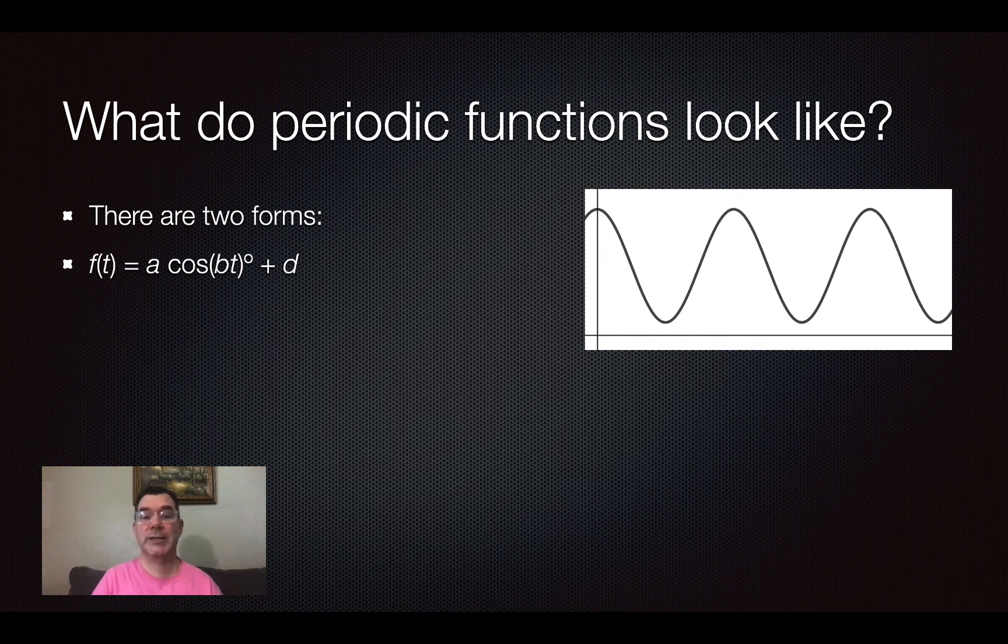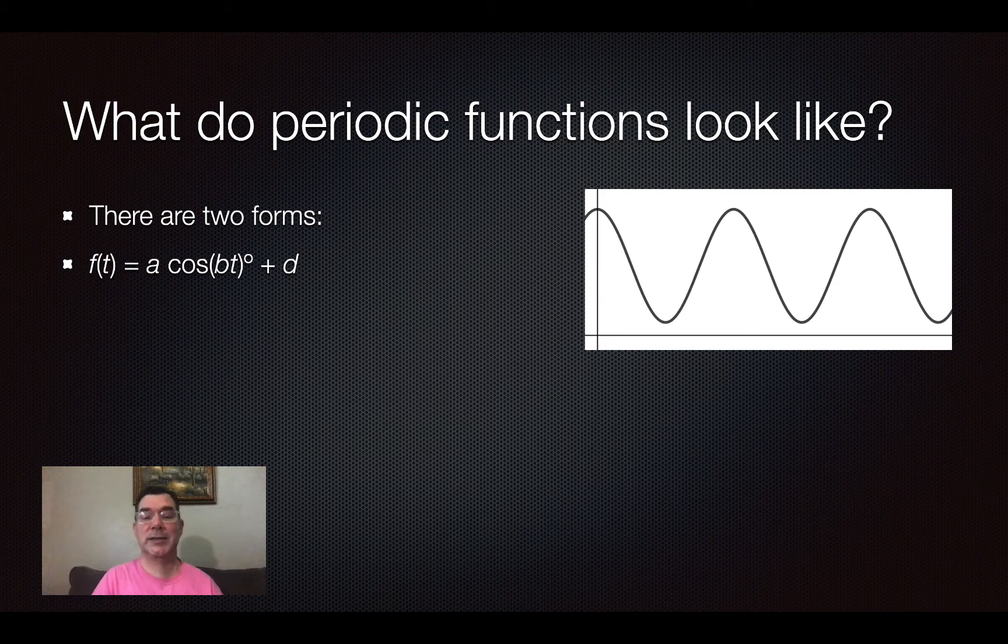Now, what happens with a cosine function is when you are at the y-axis, the graph is at its highest point, its maximum point, and then as you move to the right, the graph continues downward from there and then comes back up.